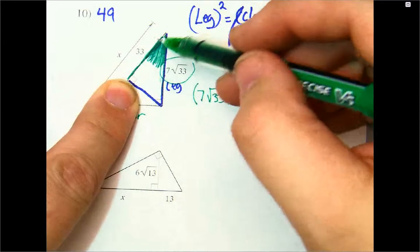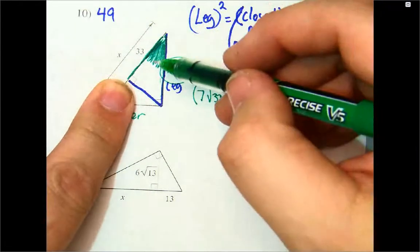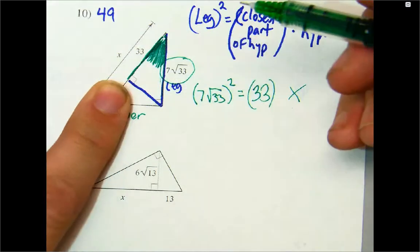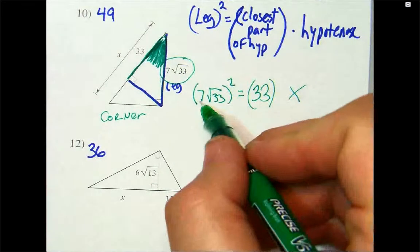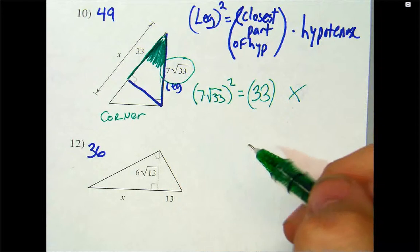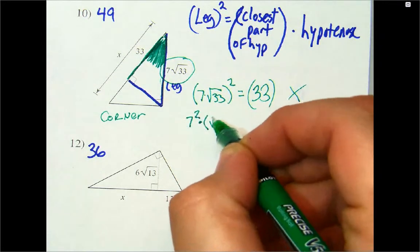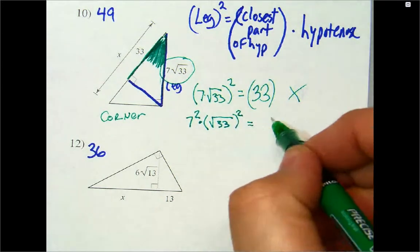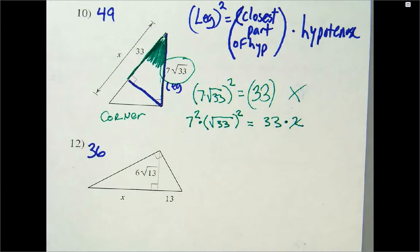It comes from the fact that all three of these triangles are similar. But an easy way is to say, all right, well, it's this part with this part. Now, here's the trick when you have two numbers that are being multiplied. Really, this is 7 times the square root of 33. What this is going to be is 7 squared times the square root of 33 quantity squared, and that's going to be equal to 33 times X.